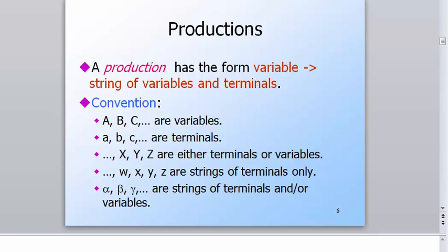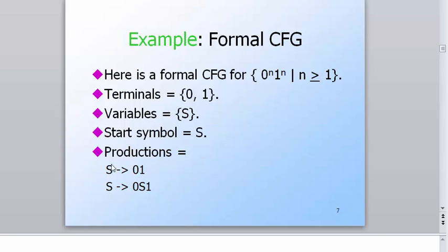For example, variables could be A, B, and C. Variables are usually on the left-hand side of a production. Examples of terminals are small letter a, small letter b, small letter c, or 0, 1, etc. They're usually on the right-hand side. Numbers and small letter symbols are usually given as terminals. The best way to identify a terminal and a variable is to observe the productions. Productions have this arrow symbol that determines the rules — the symbol on the left-hand side can be replaced by 0, 1. So S is a start symbol as well as a variable, and 0, 1 are the terminals.